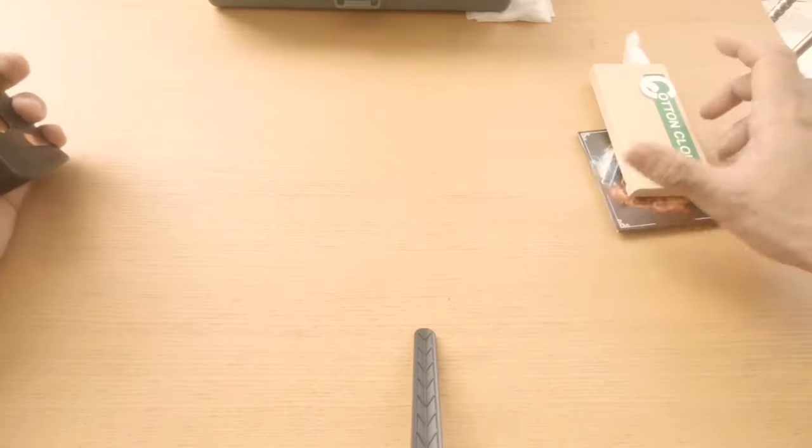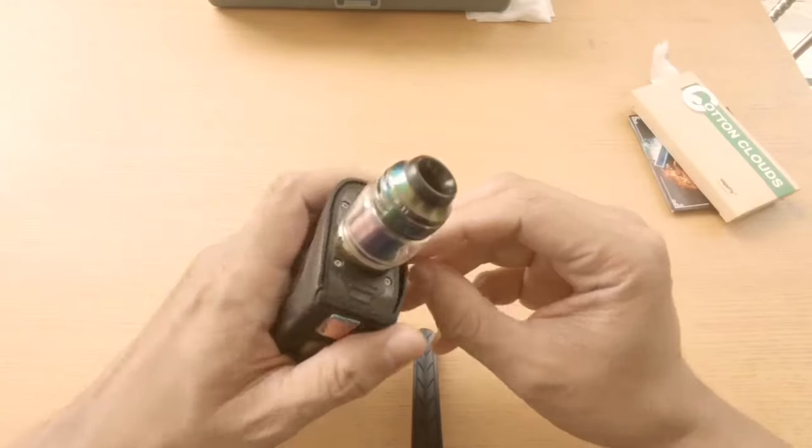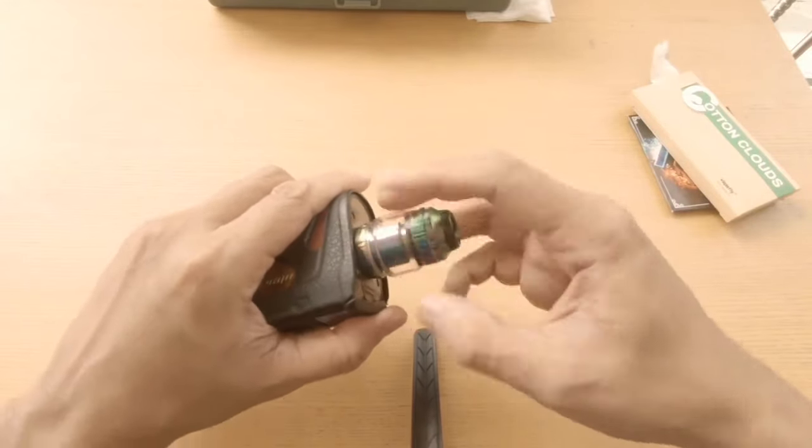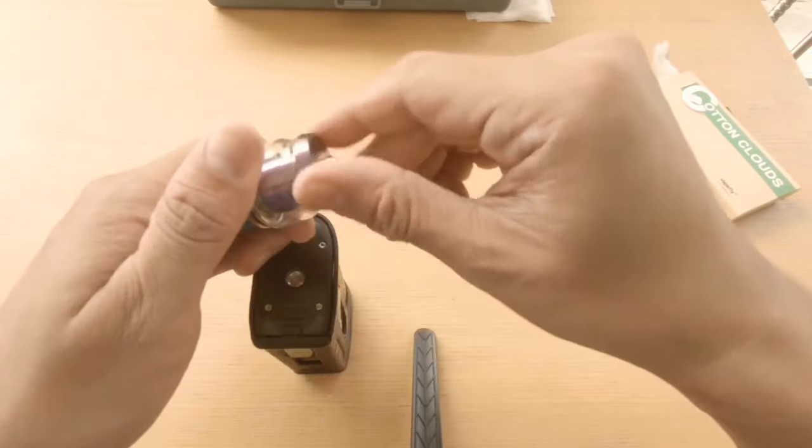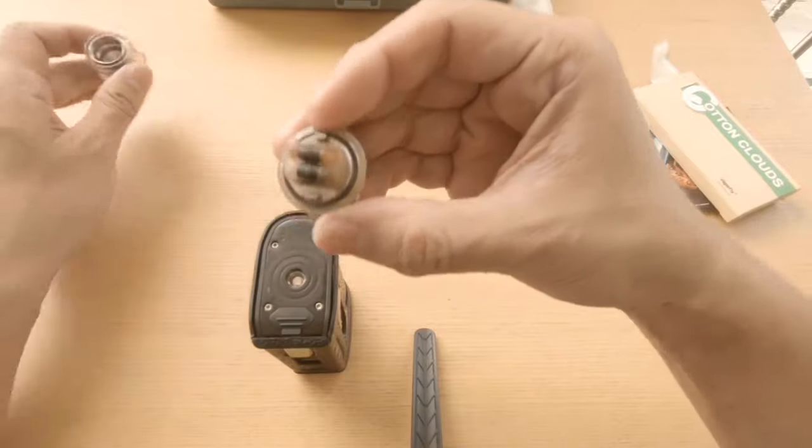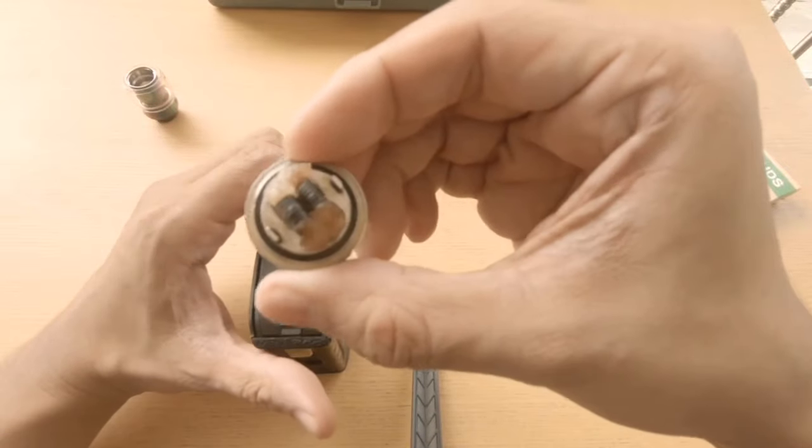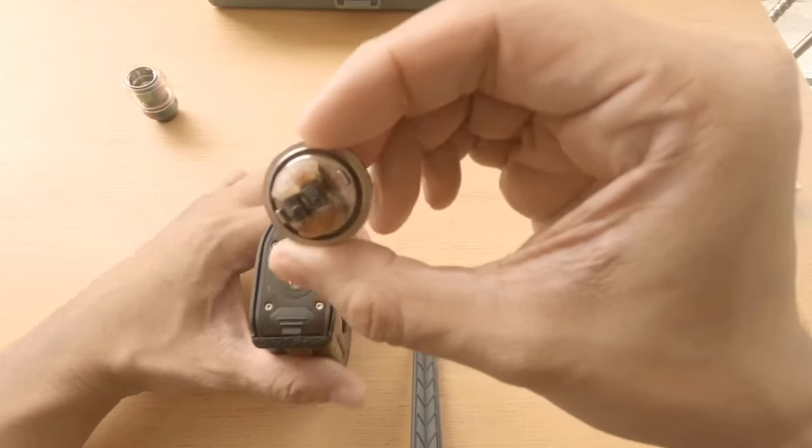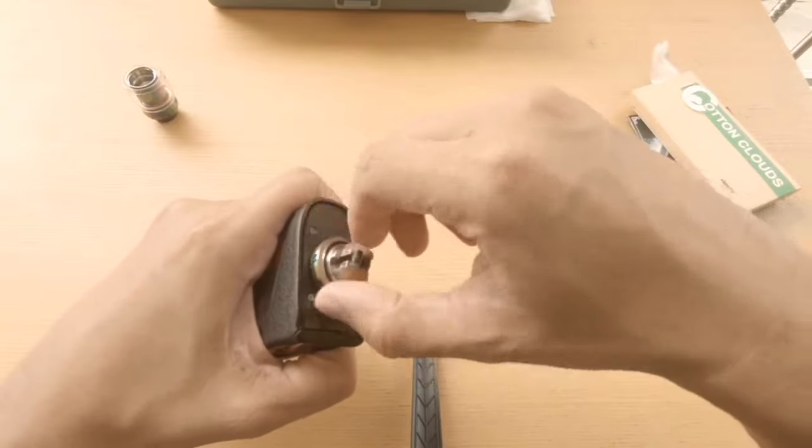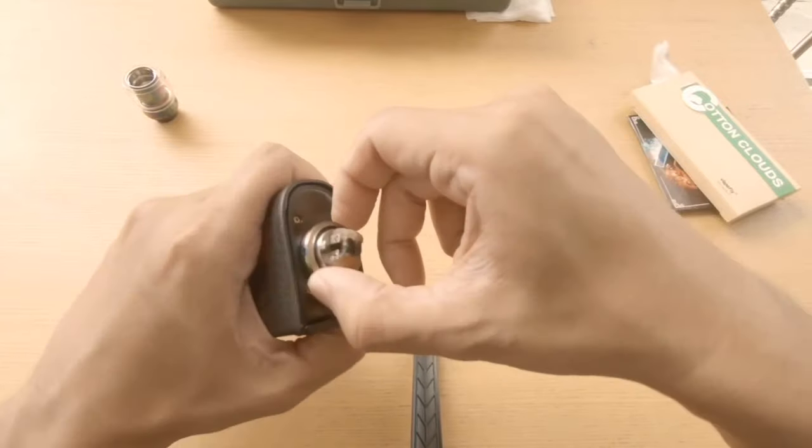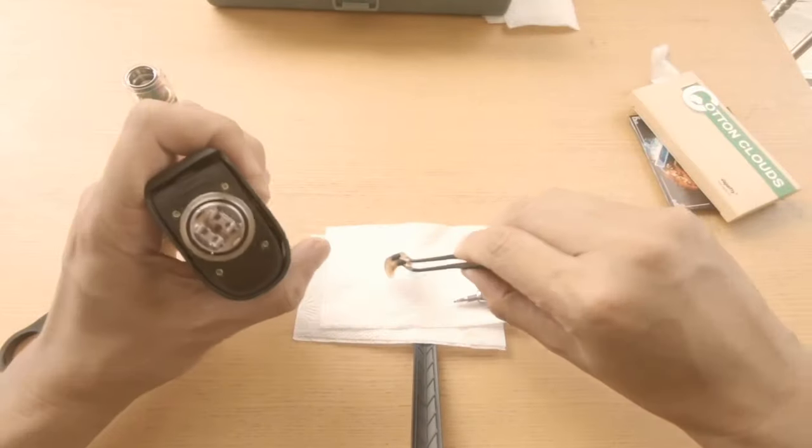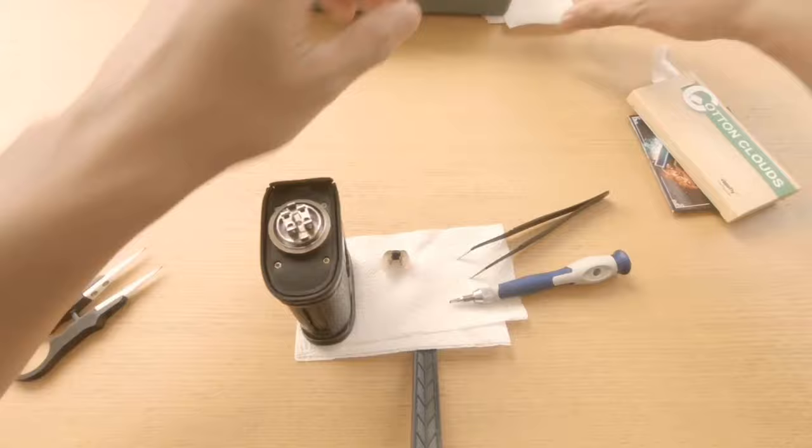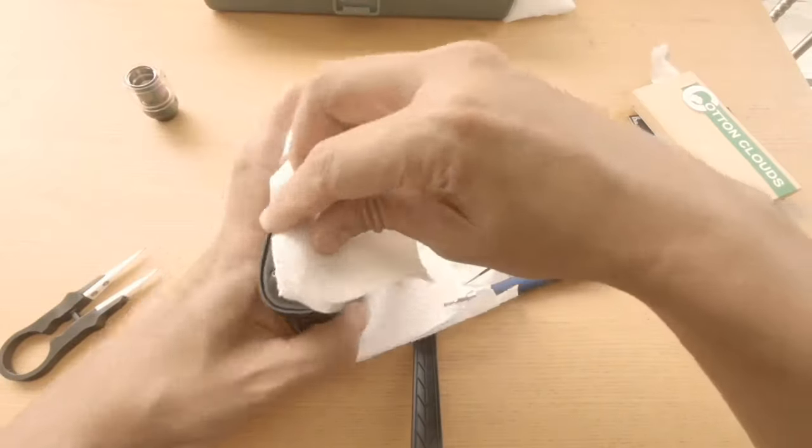Today I'm going to be building on the Zeus X atomizer. Opening this bad boy up, you can see my coils are already burnt a little bit and I don't want that to affect the flavor of the juice, so I'm going to put it on the plate. Let's clean this up.